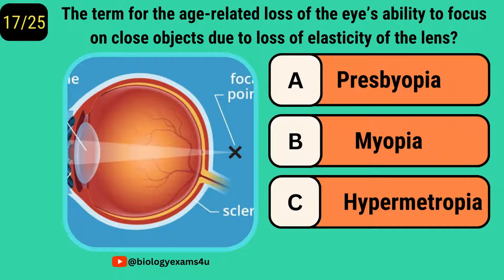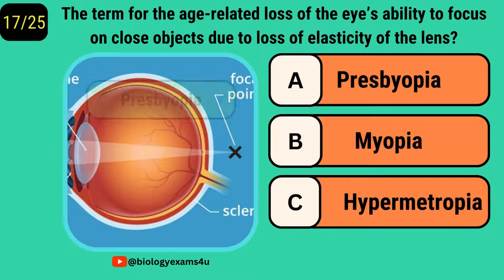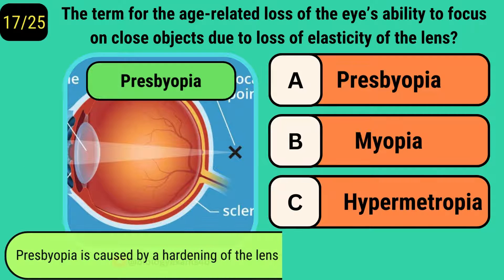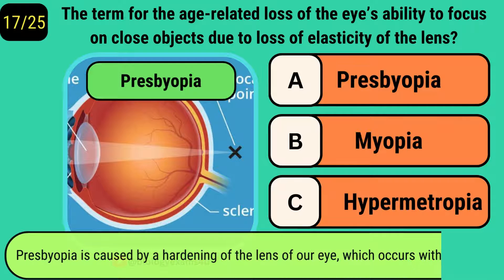What is the term for the age-related loss of the eye's ability to focus on close objects due to loss of elasticity of the lens? It is called presbyopia, caused by the hardening of the lens of our eye due to aging.